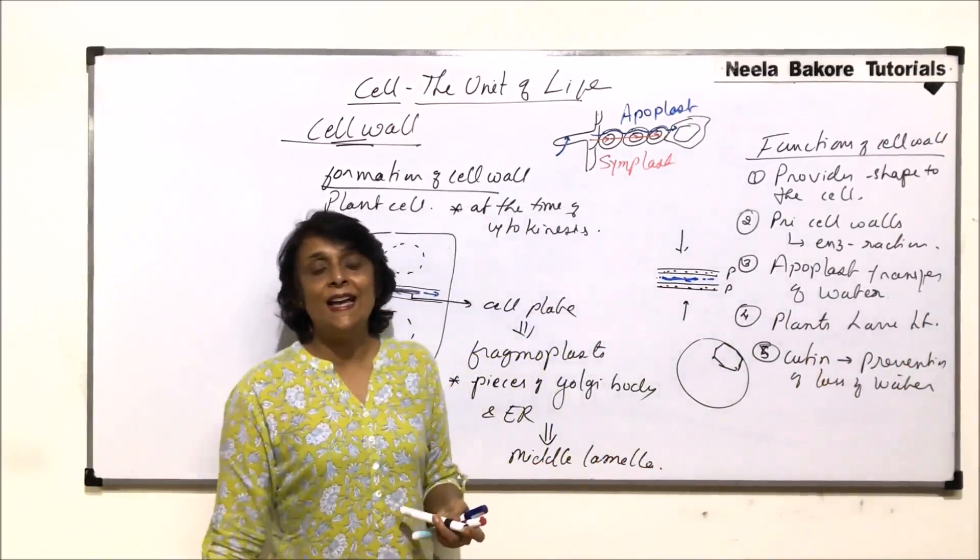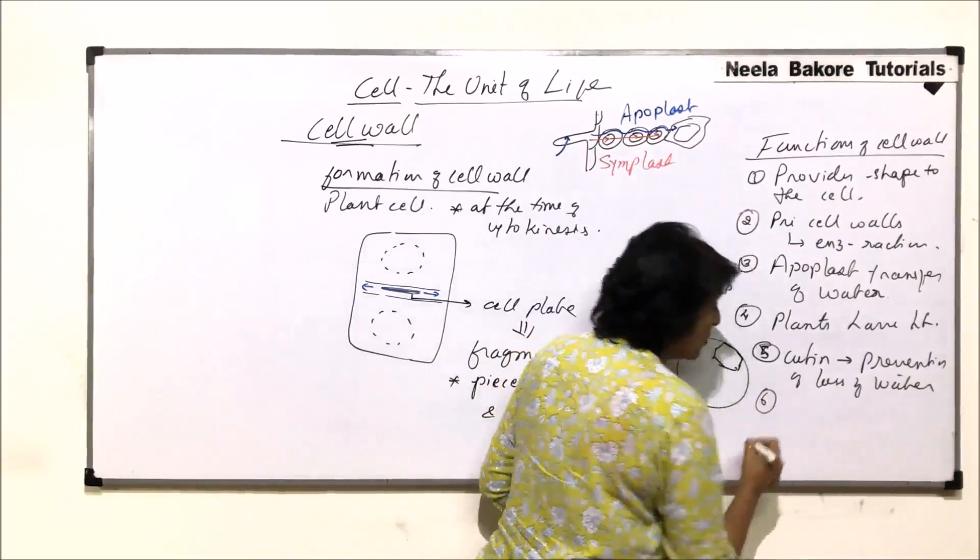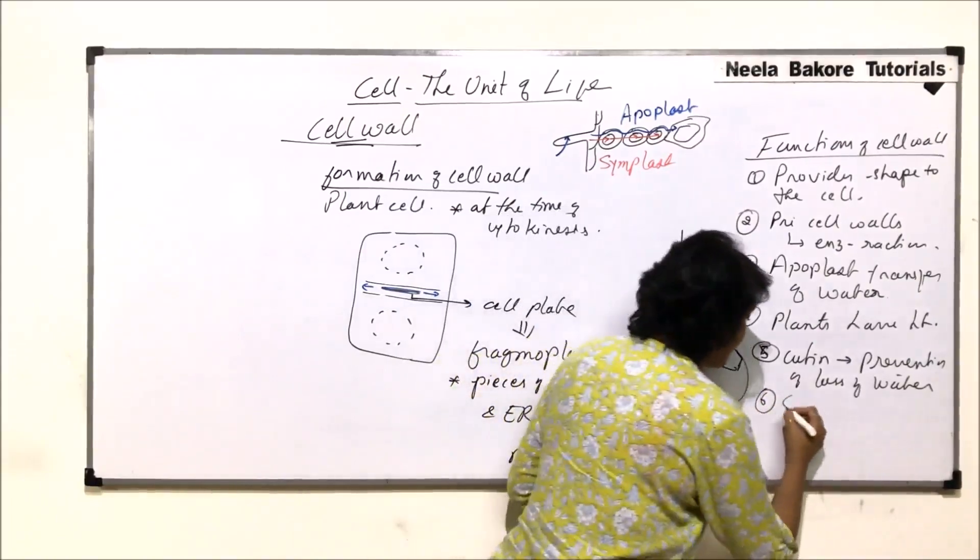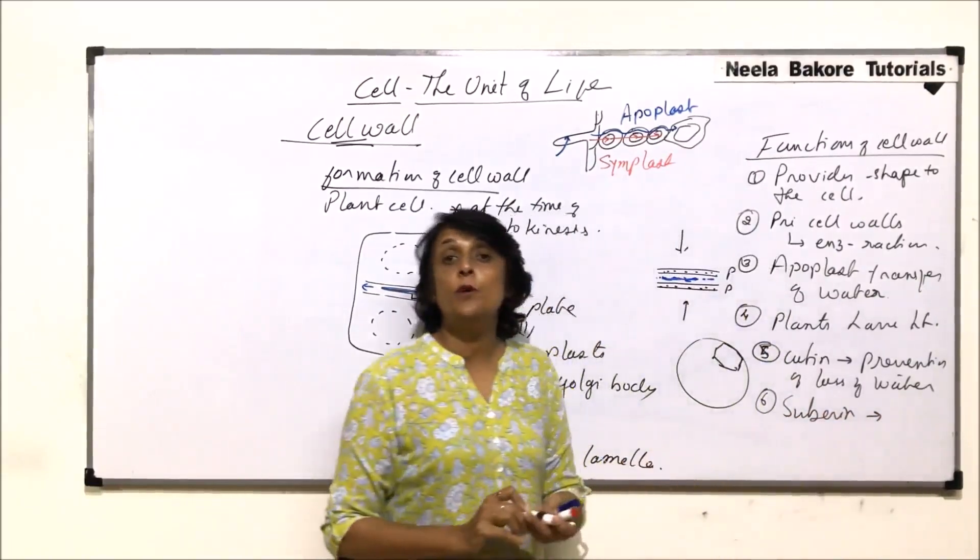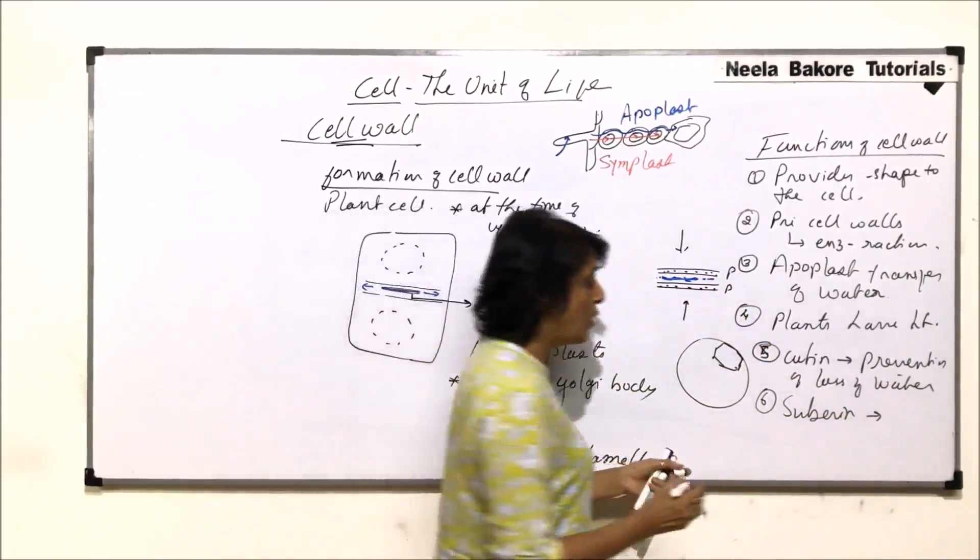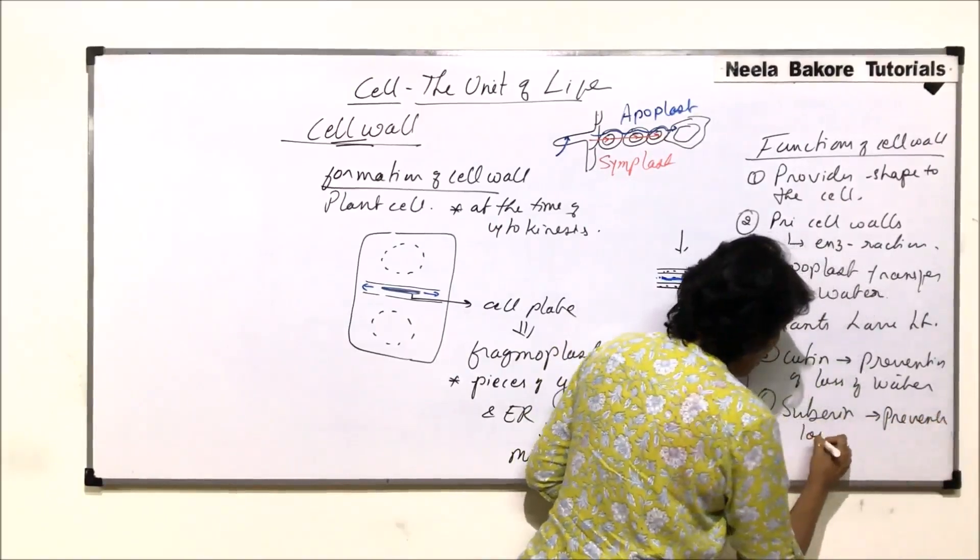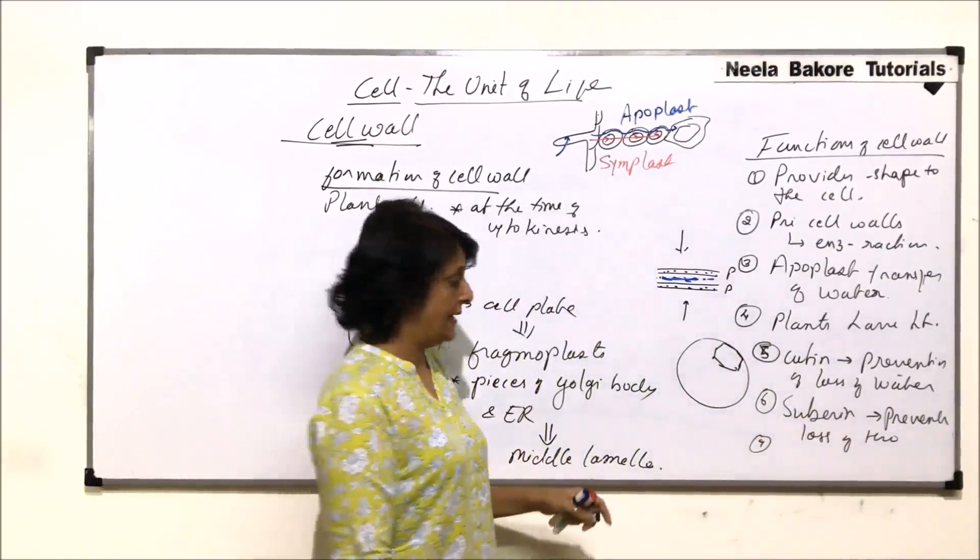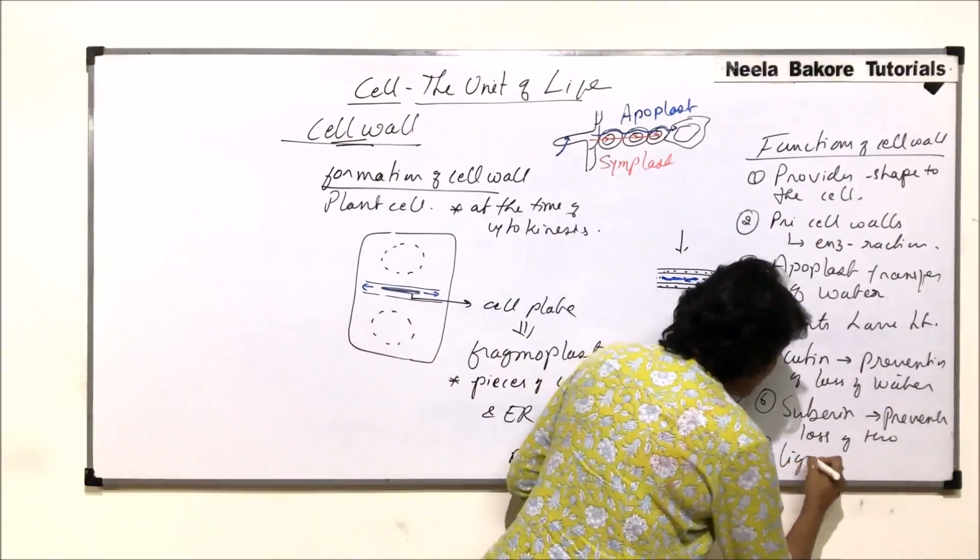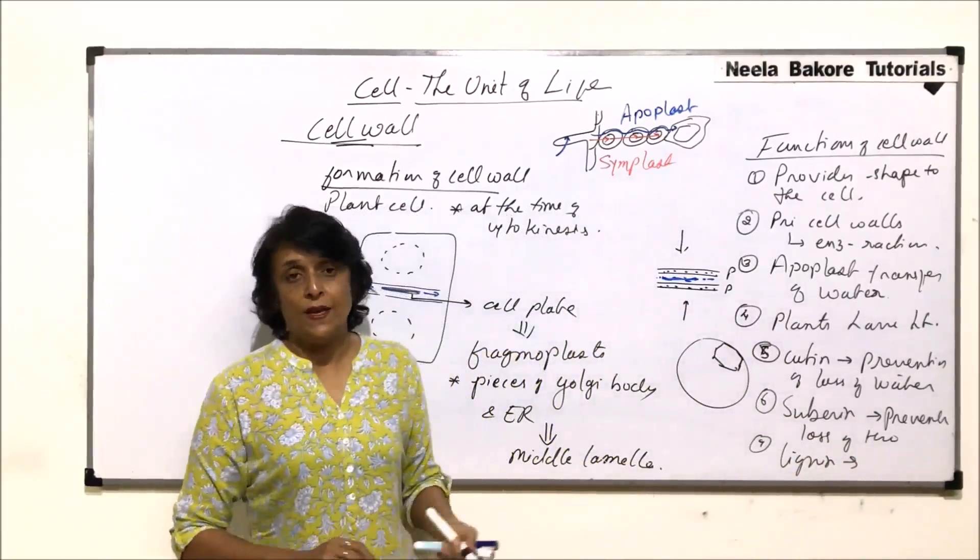So cutin is going to help in prevention of loss of water and that is why this cutin containing layer is on the external surface. Same thing is going to happen with suberin. Suberin is also a substance which is impervious to water, so it also prevents loss of water. And the last substance, that is lignin, due to lignin deposition there is an additional strength.